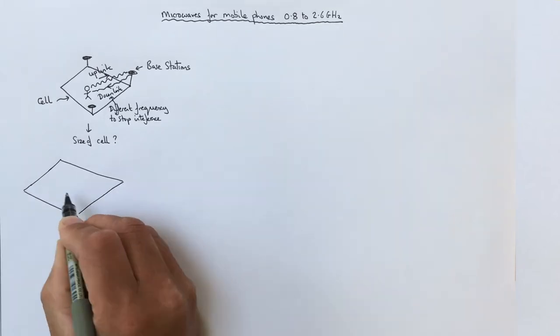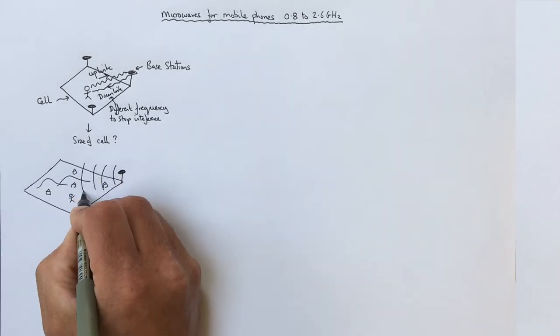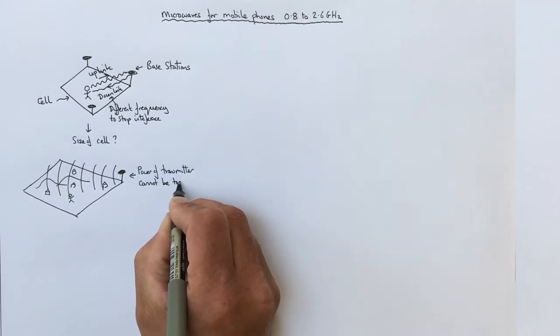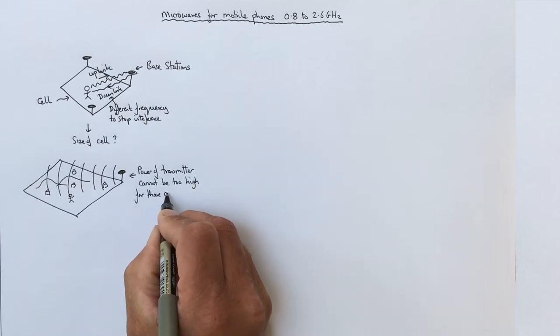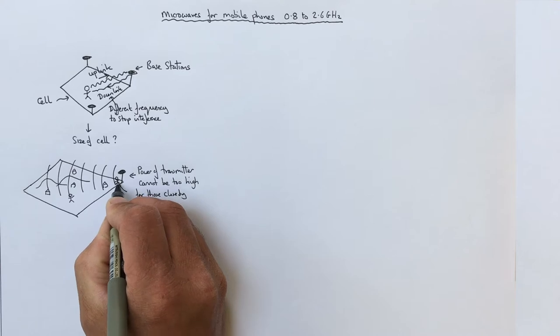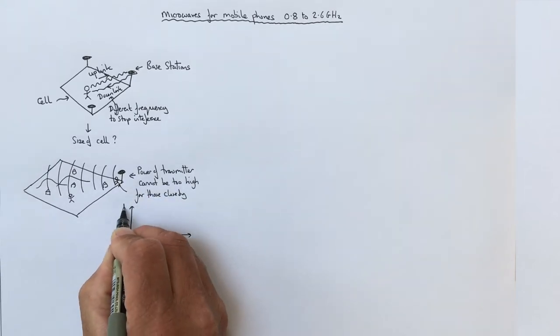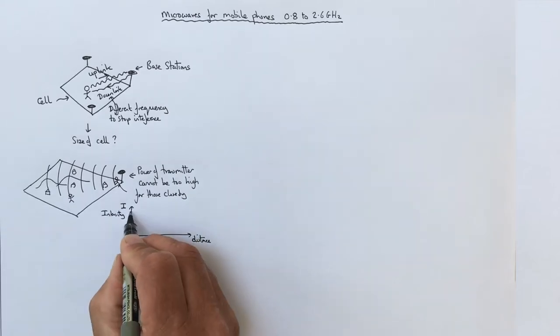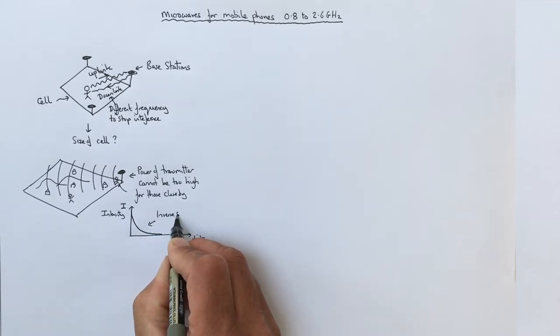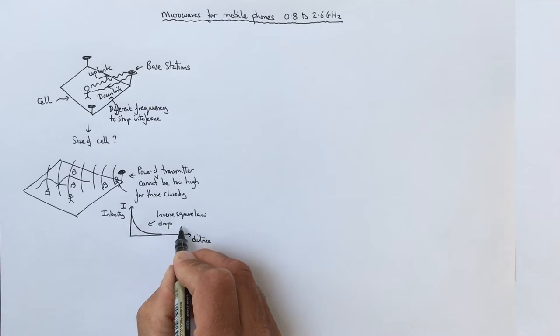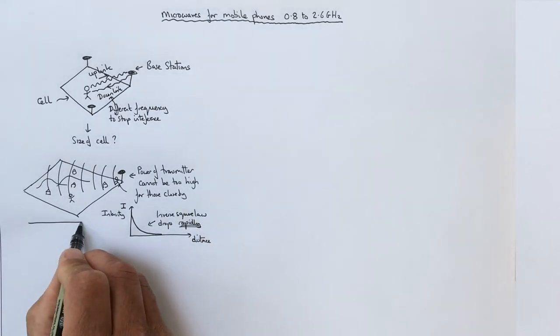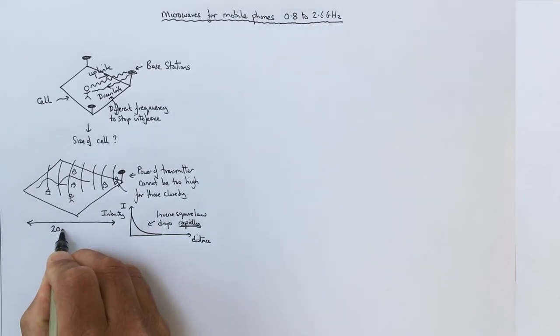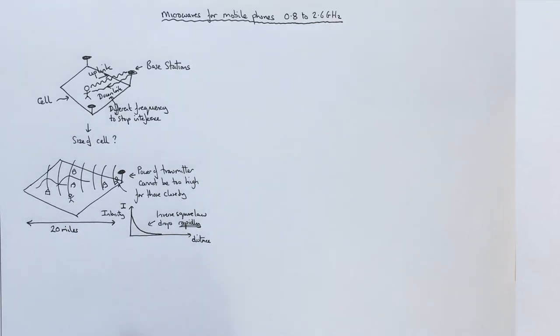So what size are these cells? Well in the countryside the cells are the largest. The key thing is the power of the transmitter cannot be too high. Because anybody that's close by would be exposed to high energy microwaves. There is no evidence at all that these cause any danger to health. But as a safe precaution there's a limit to how powerful these microwaves can be from the base station. Now we know that the radiation or the intensity of the radiation drops very rapidly with distance away because of the inverse square law. So in the countryside where the population density is low the maximum size of the cells is 20 miles. After that you're going to receive two lower signals.